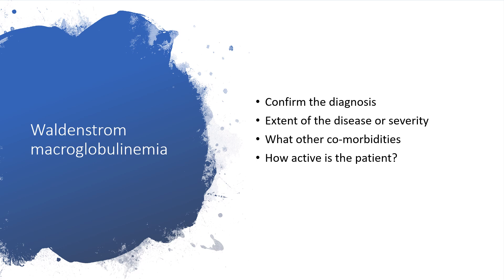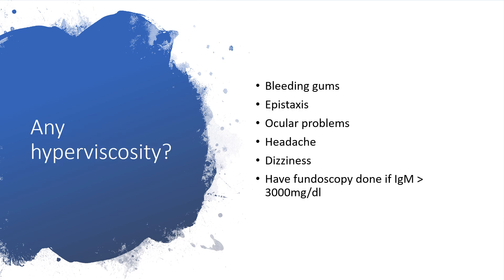Waldenström macroglobulinemia treatment. The treatment will start from the confirmation of the diagnosis — let's be sure this is truly WM. Then we need to determine the extent of the disease or its severity, and whether this individual has other comorbid situations like heart defect, kidney failure, or COPD. That's why we need to determine how active this individual is. We are going to find out how we're dealing with hyperviscosity, because that is part of the problems when it comes to WM.